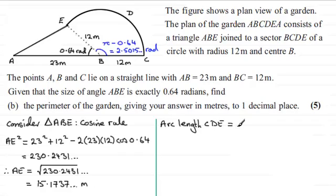That fraction would be the angle 2.5015 and so on, compared with a full turn of 2 pi radians, so it's this fraction of the circumference. The circumference is 2 pi r, so it's 2 pi times the radius, which was 12.